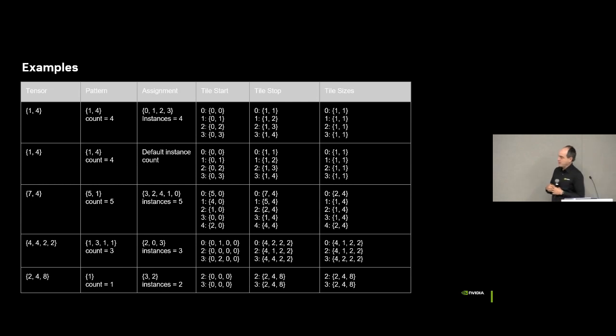In the bottom row, what we have is the broadcast situation. So we have a three-dimensional tensor of 2 by 4 by 8. We have a single tiling pattern, so you divide everything by 1. And then we have two instances of instance 3 and instance 2. So that means we're creating a tiling pattern for the third and second instance in a four-instance system. If you use the formulas on this, you'll end up with both of them have the start and stop equal to the entire tensor, and the tile size is the entire tensor itself.